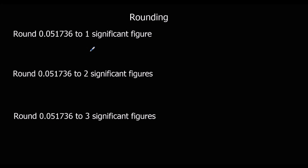And this time, remember we start counting from the first non-zero number. So that's 0, that's 0 — so we count there: 1. One significant figure. The next number is a 1, so it's not going to push it up to a 6. So the answer is 0.05.